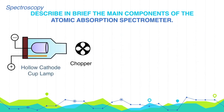2. Rotating Chopper. A rotating wheel having several holes in it breaks the beam of light coming from the cathode lamp and produces an intermittent or broken light beam.